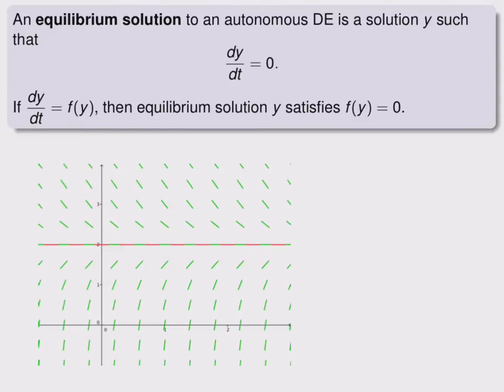For an autonomous differential equation, a special type of solution called an equilibrium solution is a solution y such that dy/dt equals 0. If we write dy/dt as a function of y, then an equilibrium solution y makes f(y) equal to 0.